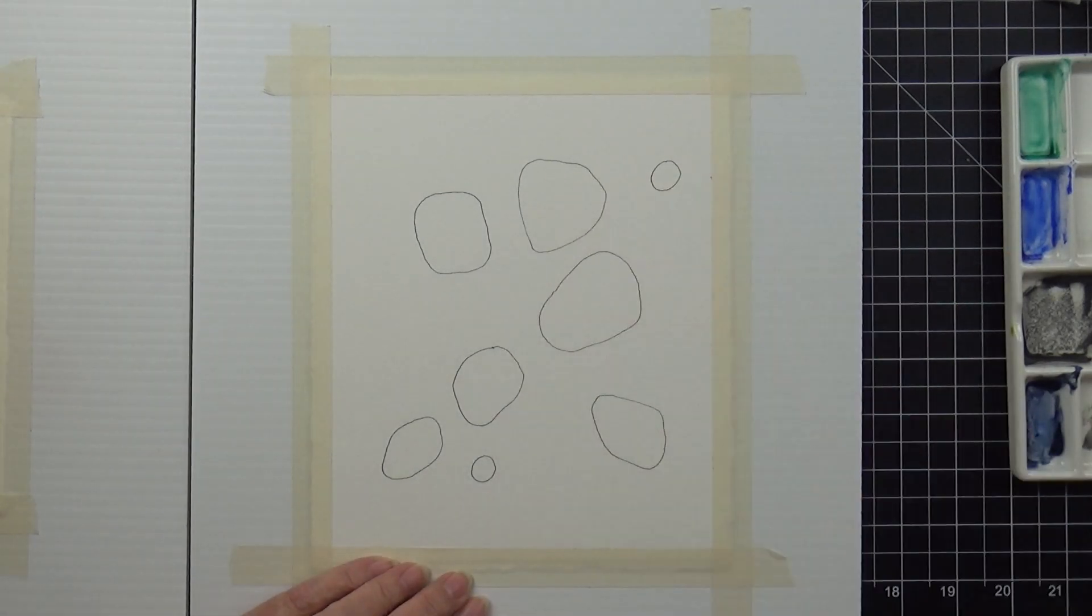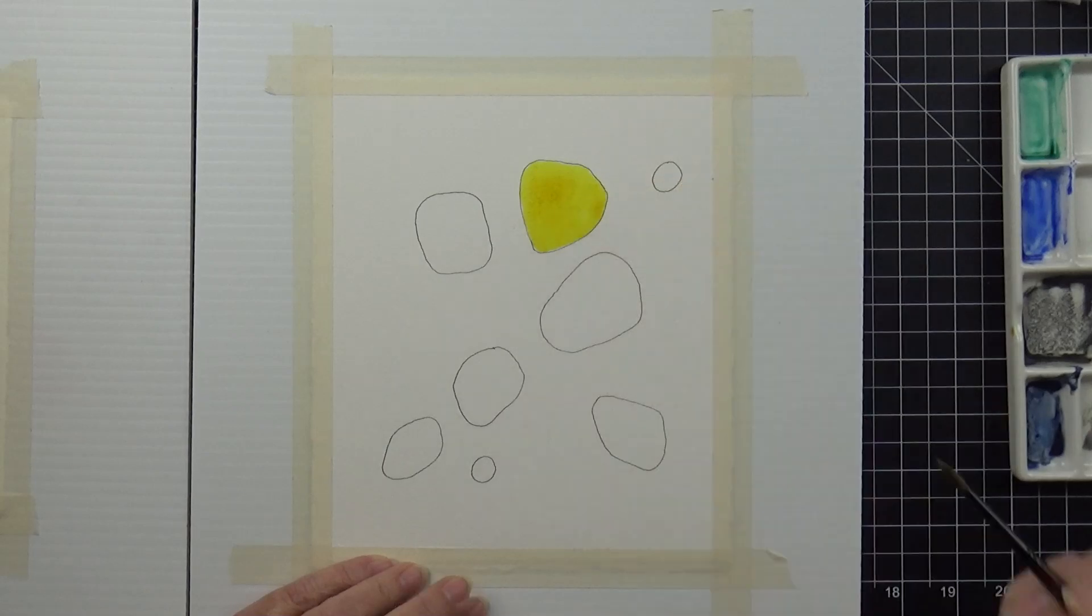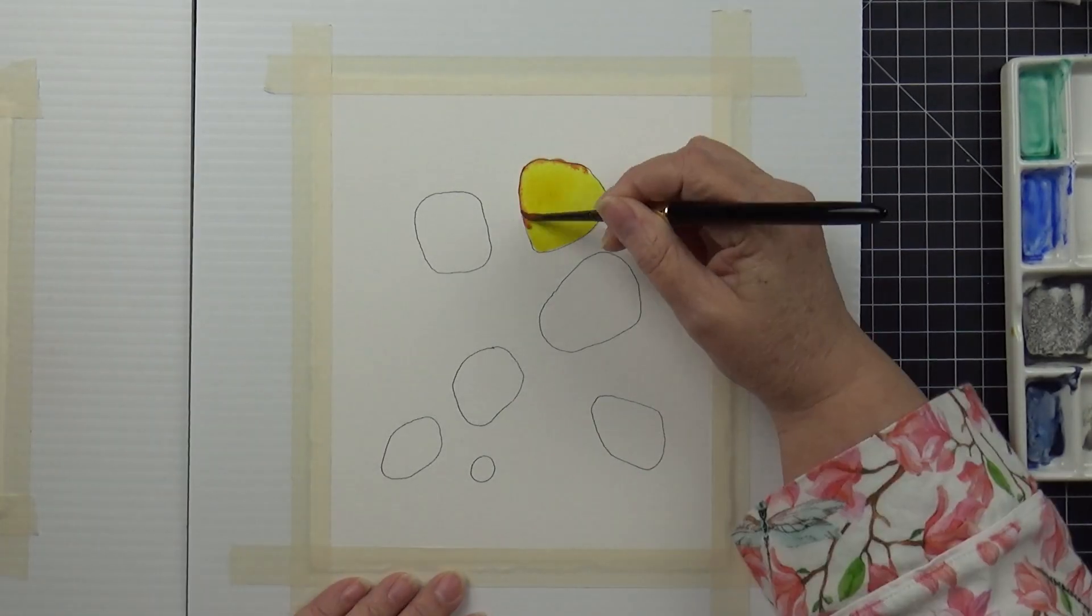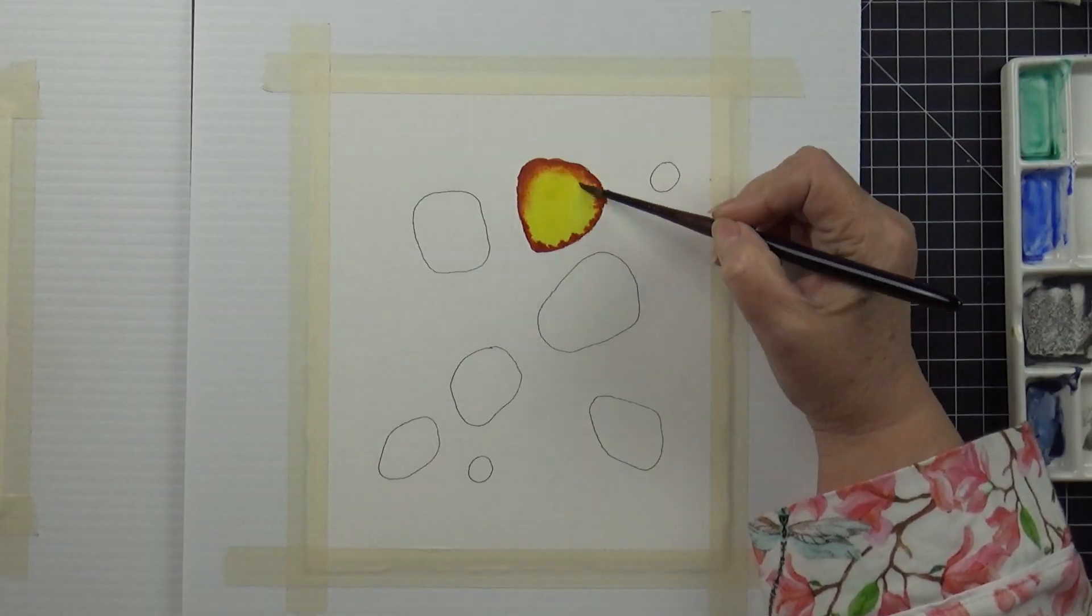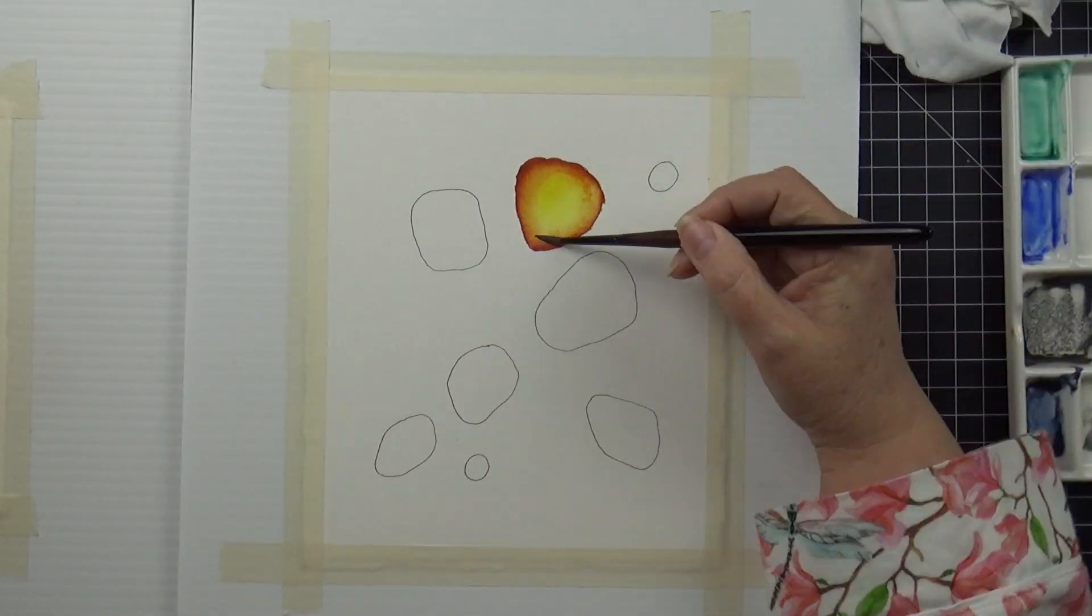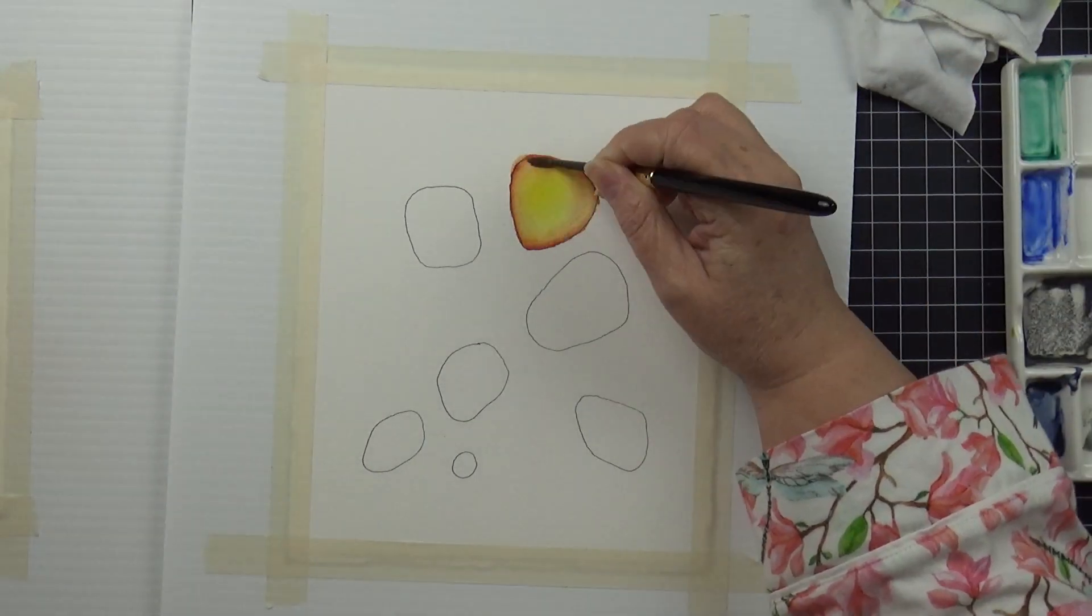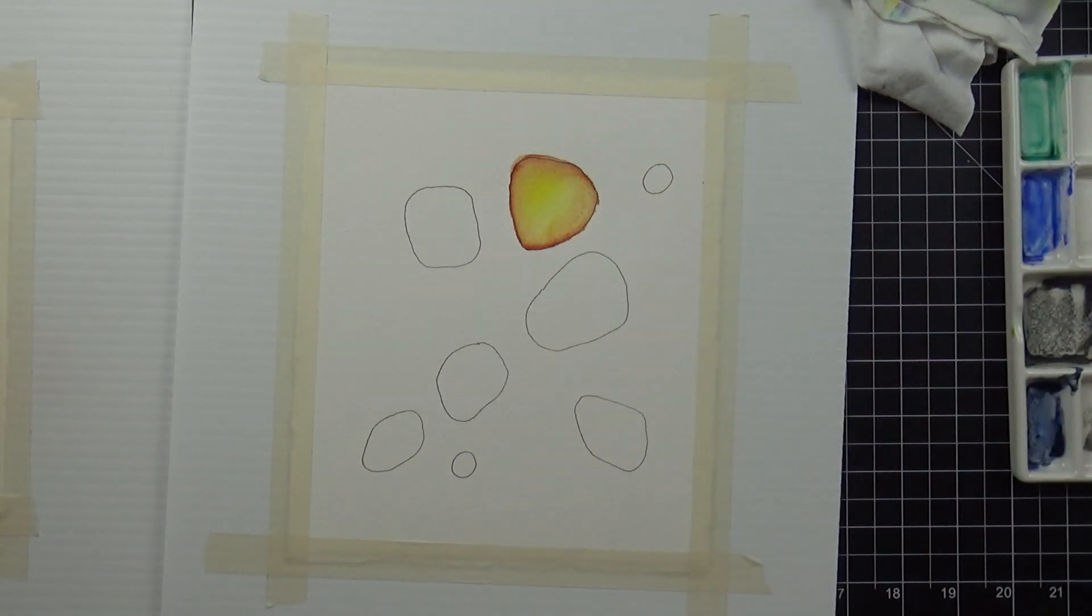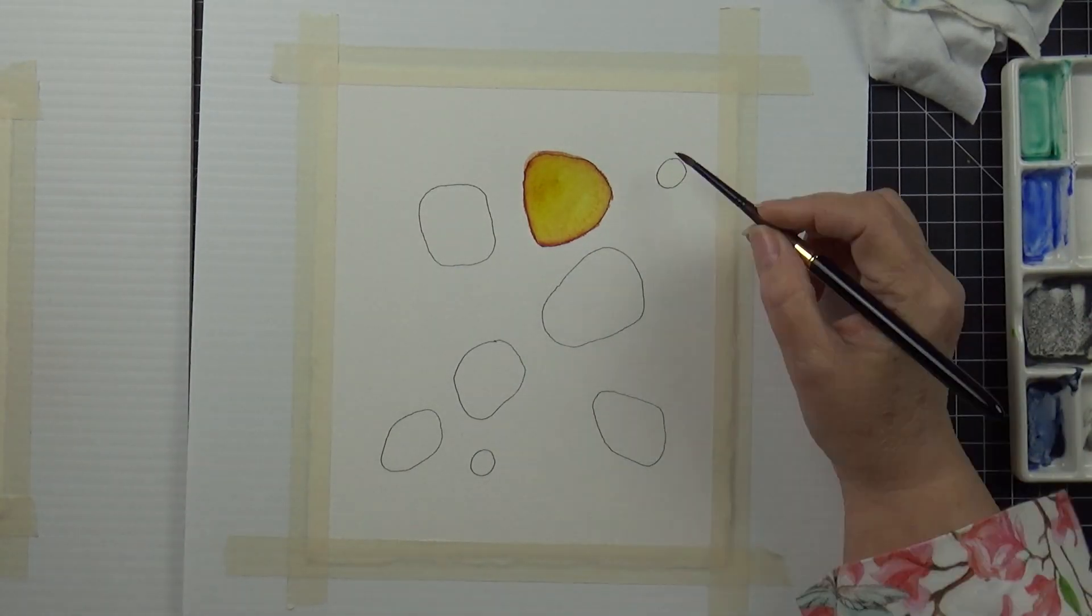Once I do that, I'm going to add some color. Now if you do watercolor and you watch watercolor videos here on YouTube, you know that the hot thing right now is granulating colors in watercolor. I've been wanting to experiment with them, but I didn't really buy any new colors. I'm just using the granulating pigments that I already have.